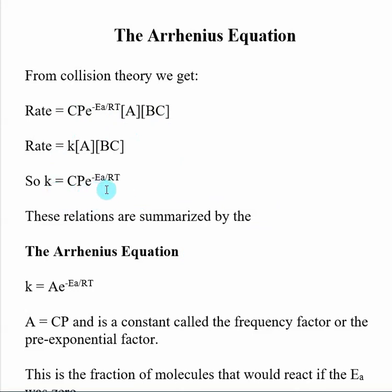When we look at this, K is really determined by energy of activation and temperature. R is a constant and CP is a constant that we discussed in the collision theory. Really, those pieces are not what we're interested in, and that's really what the Arrhenius equation is going to do. It's going to focus on the variables involved and what determines K.